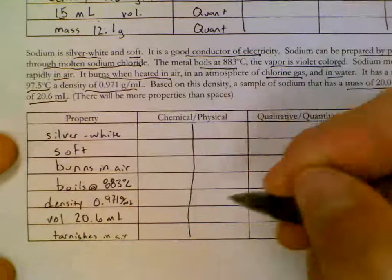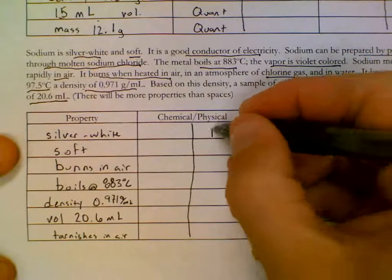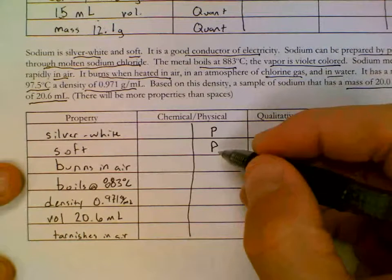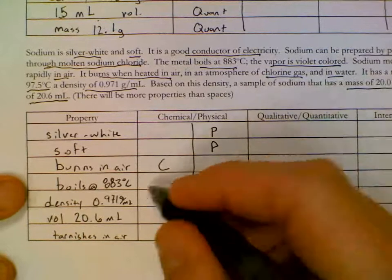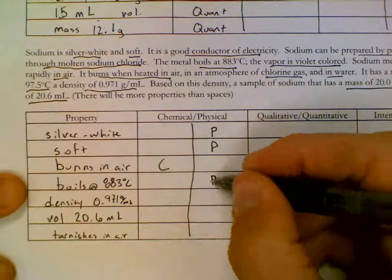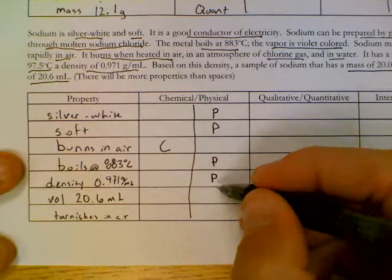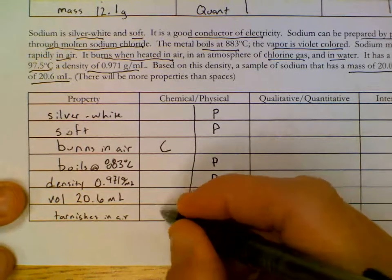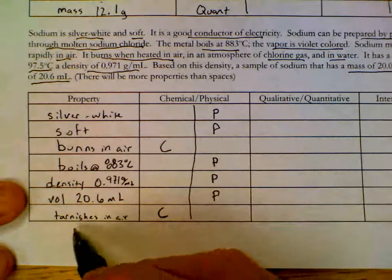So physical or chemical. Silver white. Physical. Physically described with your senses. Soft. Touch that. Burns in air. The word burn is a chemical word. Boils is physical. You might think boil is chemical but it's physical. Density is a measurable thing. Easily seen. Volume is measurable. Easily seen. Physical. Tarnishes. It's talking about a chemical reacting word. Tarnishes, chemical.